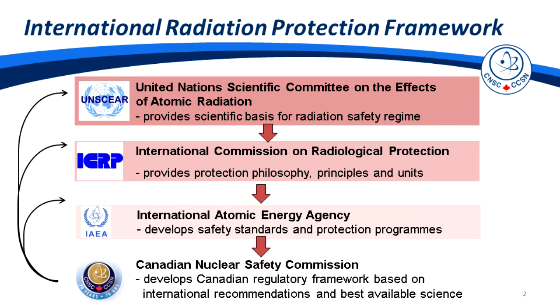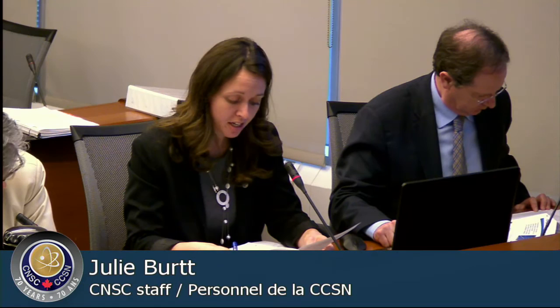Next, the International Atomic Energy Agency, or IAEA, develops safety standards and protection programs for member states to adopt. Finally, the Canadian Nuclear Safety Commission, or CNSC, uses all of this information to develop Canada's regulatory framework, based on the best available science. CNSC staff provide expertise to all of these international agencies through serving as delegates, sitting on working groups, or providing comments on draft publications. Furthermore, the CNSC can deviate from international guidance to ensure Canada's best interests are met.